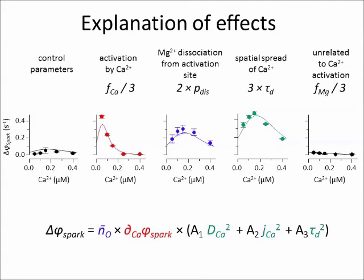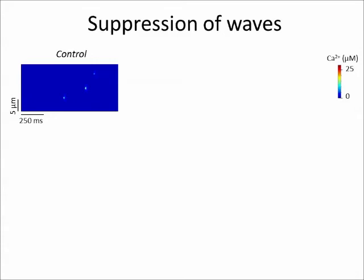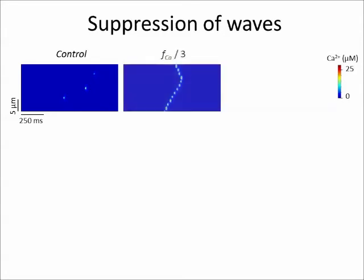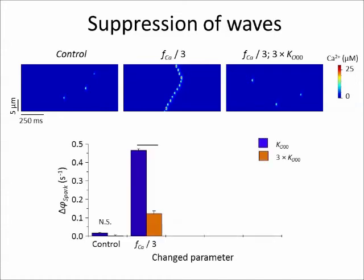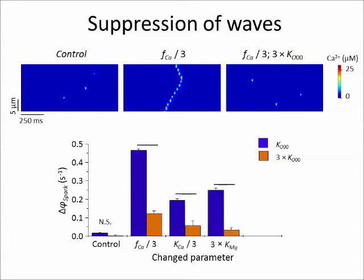Since calcium waves can occur due to changes in different parameters of the RYR, this begs the question whether it is possible to prevent wave formation induced by different RYR gating changes by a common treatment at the level of RYR gating. We simulated the effect of such treatment on calcium waves induced by increased allosteric action of calcium, by changing the parameter KO00, which by itself has a weak effect on formation of calcium waves. The frequency of triggered sparks was significantly decreased upon treatment. Analogous results were obtained when waves were induced by other parameter changes that increased either calcium sensitivity of spontaneous spark frequency or the number of open RYRs in spontaneous sparks.